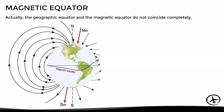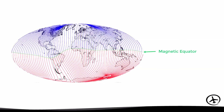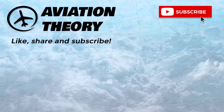Something important to mention is that these northern and southern hemispheres are determined in relation to the magnetic equator instead of the geographic equator. As we can see in this image, they do not always match, and therefore the effects caused by magnetic dip will depend on the position in relation to the magnetic equator, not the geographic one. In this image, the green line represents the magnetic equator, the blue area corresponds to the magnetic northern hemisphere, and the red area to the magnetic southern hemisphere. I hope the information in this video was useful — don't forget to share, like, subscribe, and leave a comment below. Thanks for watching.